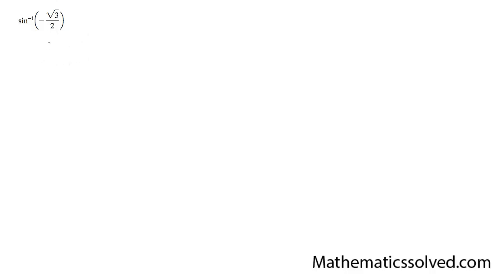All right, so here I have an inverse sine of negative root 3 over 2, which is the same thing as sine - well, I'm rewriting this so I can see it better. Sine of x equals negative root 3 over 2.